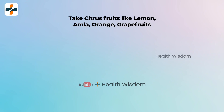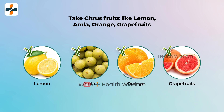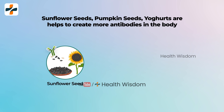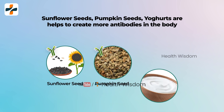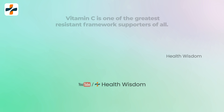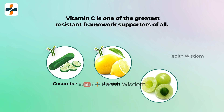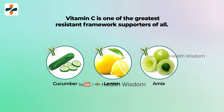3. Take citrus fruits like lemon, amla, orange, and grapefruit. 4. Sunflower seeds, pumpkin seeds, and yogurt help create more antibodies in the body as well as boost your immune system. 5. Vitamin C is one of the greatest immune system boosters of all. Indeed, a lack of Vitamin C can make you more susceptible to becoming ill.